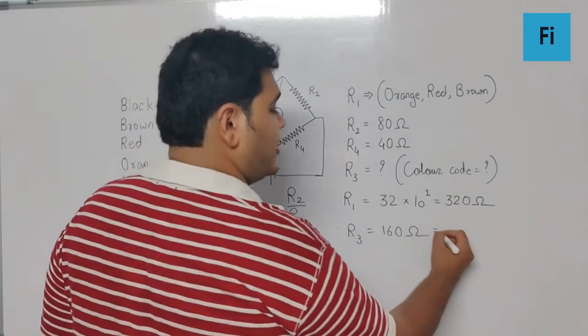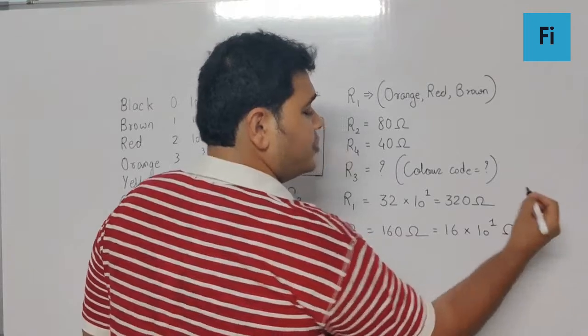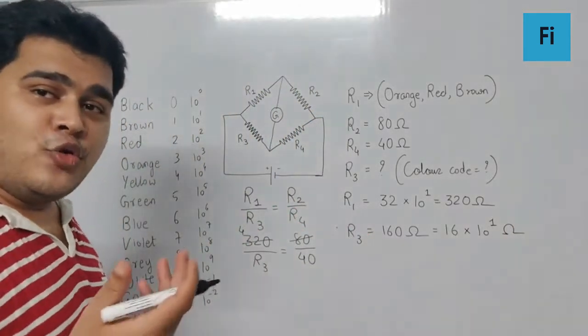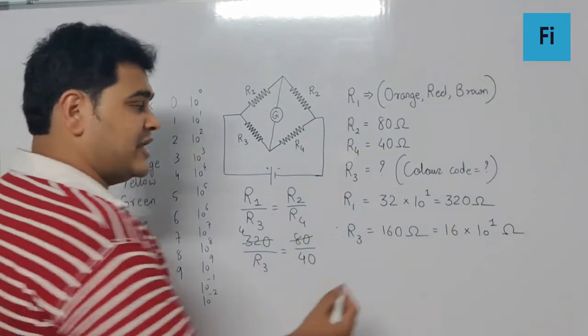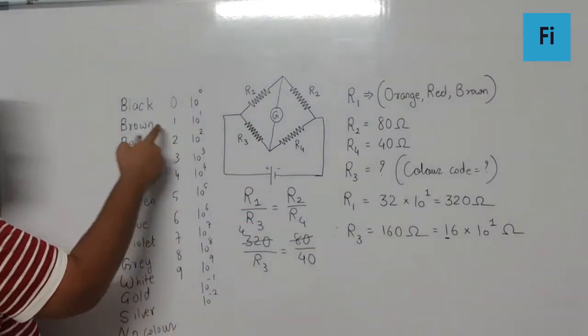Definitely we can write that 160 ohm as 16 × 10¹ ohm. So now we need to go in the reverse direction to find the color code. For example, the first digit is 1, so 1 represents the color brown. So the color code will have the first band of brown color.